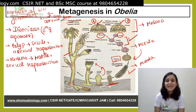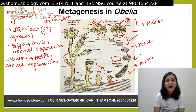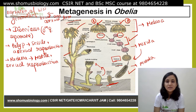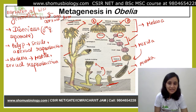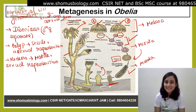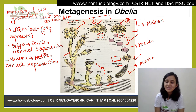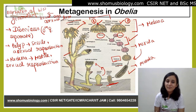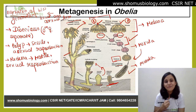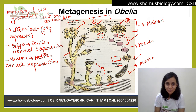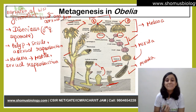The adult polyp undergoes budding, and from those buds the medusa is formed again. So from the polyp, medusa are formed, and from those medusa, the polyp is formed. This diagram and explanation show that the sexual form produces the asexual form, and the asexual form produces the sexual form — this is metagenesis.